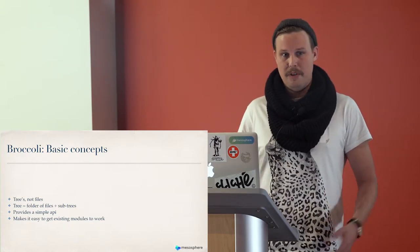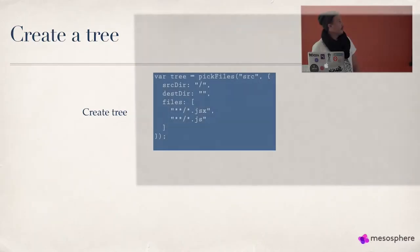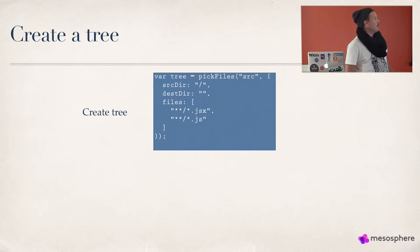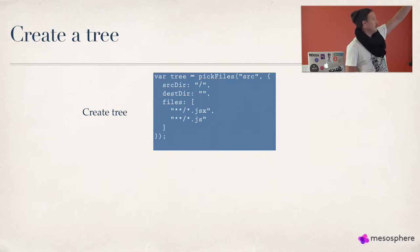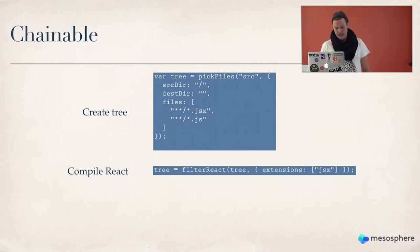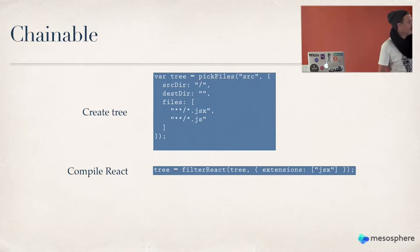First, we create a tree. We use pick files for that — give it a name, in this case 'source', to point to the name of the folder we want to look at. There are options here: the source directory, destination directory, and the files we want to look at — in this case React files and JavaScript files. Next, we want to compile the React, and as you'll notice, a tree goes in and a tree comes out.